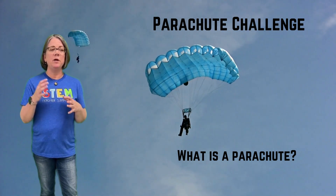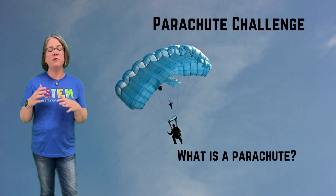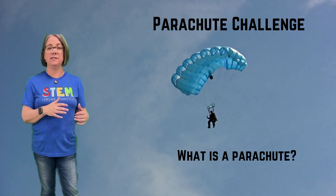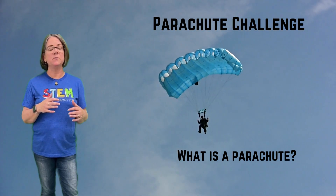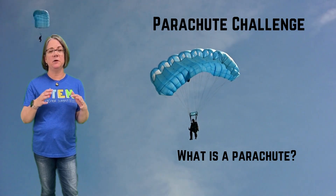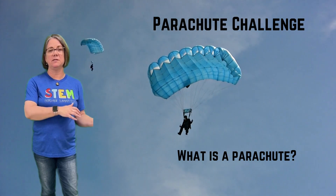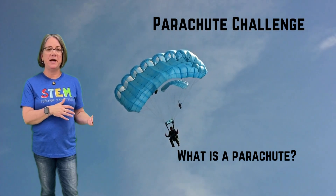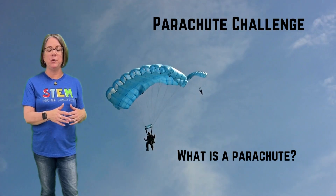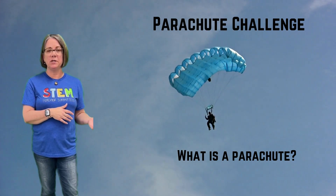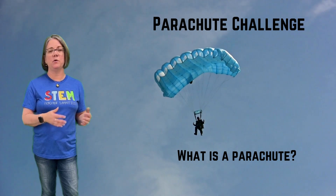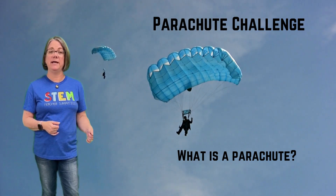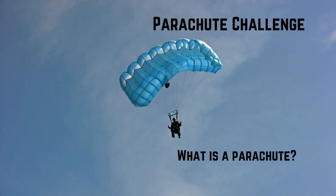When a parachute is open, it creates drag or wind resistance, and that's what allows it to float down to the ground safely — not going too fast or too slow — so that a person isn't harmed or an item isn't damaged on the way down.